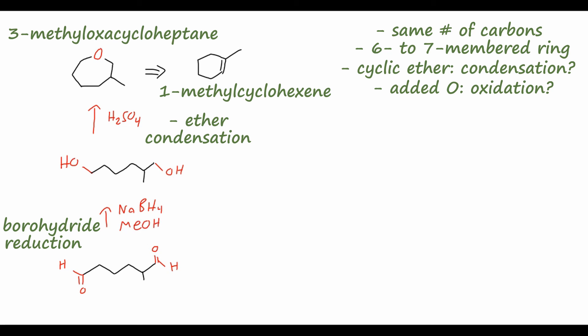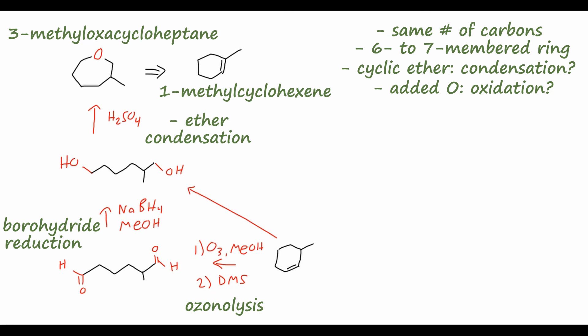Thinking backwards, we perform ozonolysis to get the carbonyl product starting from a cyclohexene where the double bond is in a different position than in our starting material. This ozonolysis uses ozone in methanol followed by dimethyl sulfide as a reductive workup. As a bonus for efficiency, we can actually accomplish the ozonolysis and reduction in one step: treat the cyclohexene with ozone and methanol, then use sodium borohydride directly to reduce the ozonide intermediate straight down to the alcohol.